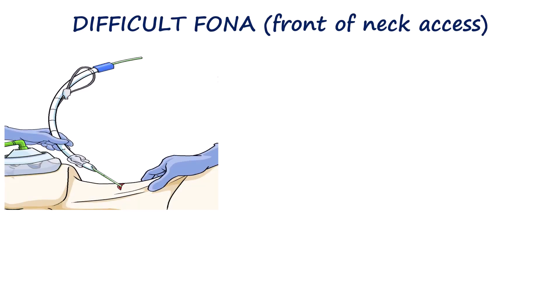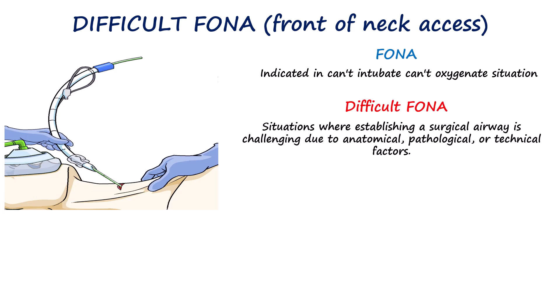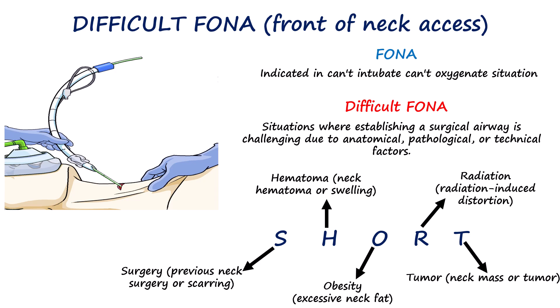Surgical airways, also known as front-of-neck access, such as cricothyrotomy and tracheostomy, are considered the last resort interventions during airway management when other attempts have failed. Difficult front-of-neck access refers to situations where establishing a surgical airway is challenging due to anatomical, pathological, or technical factors. Clinicians can use the SHORT mnemonic to remember these risk factors: S for Surgery, H for Hematoma, O for Obesity, R for Radiation, and T for Tumor.